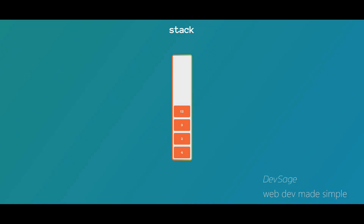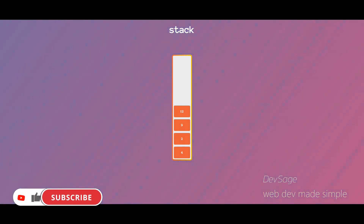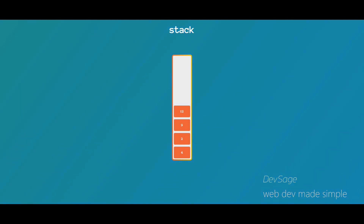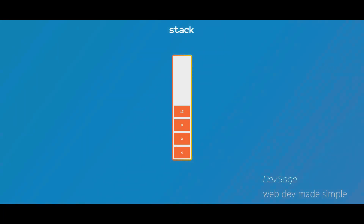One real-world application of a stack might be a text editor's undo/redo feature. Every time you do something like type a letter, that action gets pushed to an undo stack, so your most recent change is always going to be at the top of that undo stack. Whenever you want to undo that change, you just remove the item at the top of the undo stack. You can then take that same action and put it onto a redo stack, so whenever you want to redo something you just pop it off of the redo stack.